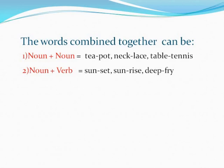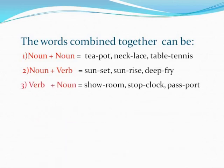The next combination is Noun plus Verb. One will be a noun and the other will be a verb. It can also be the alternate setting — Verb plus Noun. The newly formed word is known as Verb Compounding. Examples of Noun plus Verb: Sunset, Sunrise, Deep fry. Examples of Verb plus Noun: Showroom, Stopclock, Passport.